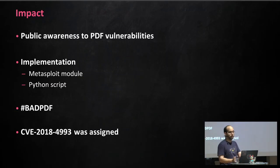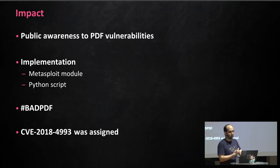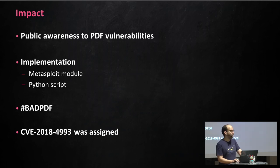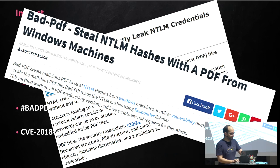Now let's talk about the impact of this research. In general, Bad PDF raised awareness of PDF vulnerabilities, getting published in many outlets such as Bleeping Computer, ZDNet, et cetera. We've also seen the rise of multiple tools implementing the result of our research, as seen in both the Metasploit module and the GitHub repository. The #badpdf hashtag was also trending around the time of publication. Finally, this vulnerability was assigned CVE-2018-4993.